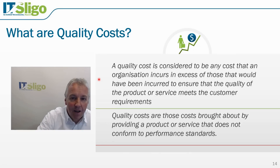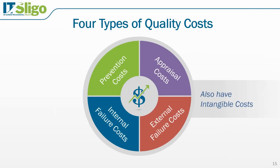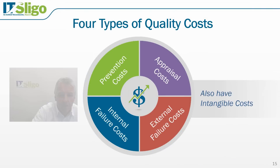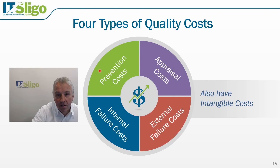Quality costs are broken down into four types: prevention costs, appraisal or inspection costs, external failure costs, and internal failure costs. The idea is that you classify your quality costs into these four areas.